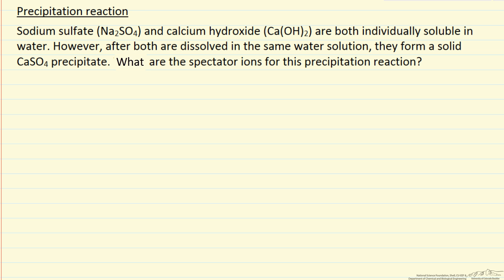In this example we have sodium sulfate and calcium hydroxide, both of which are very soluble in water, but when they are in the same solution they form a solid precipitate calcium sulfate, and the question is which are spectator ions for this precipitation reaction.